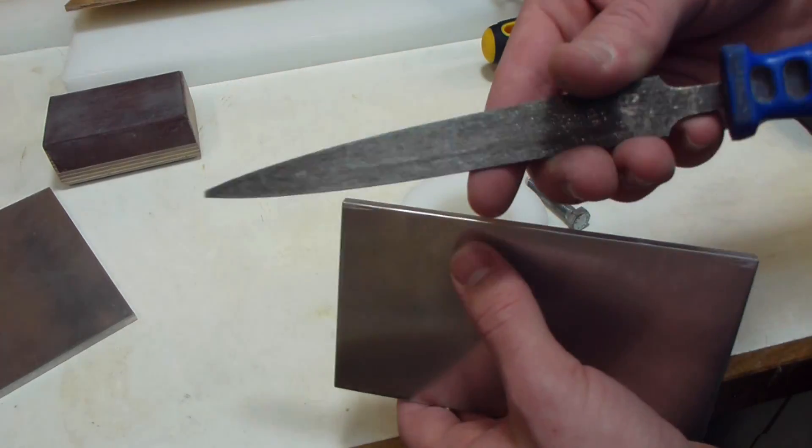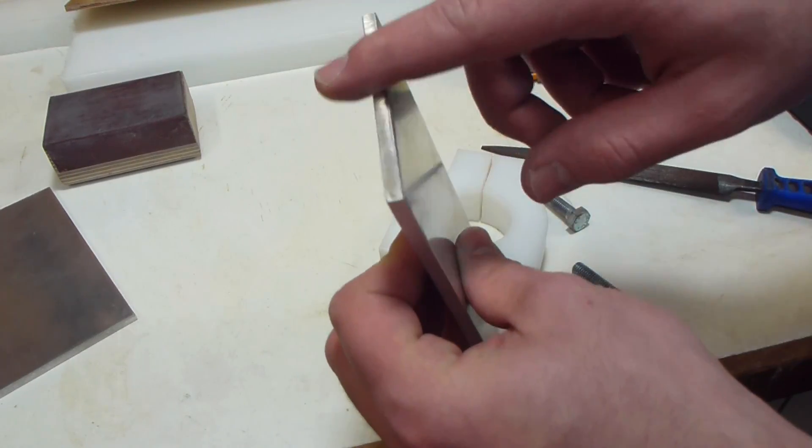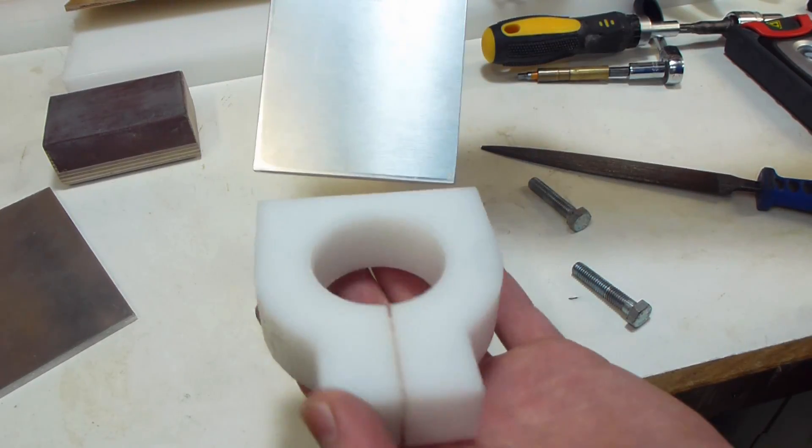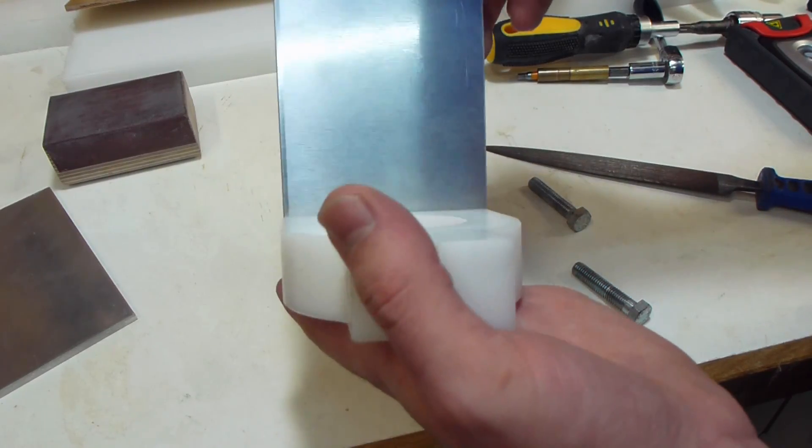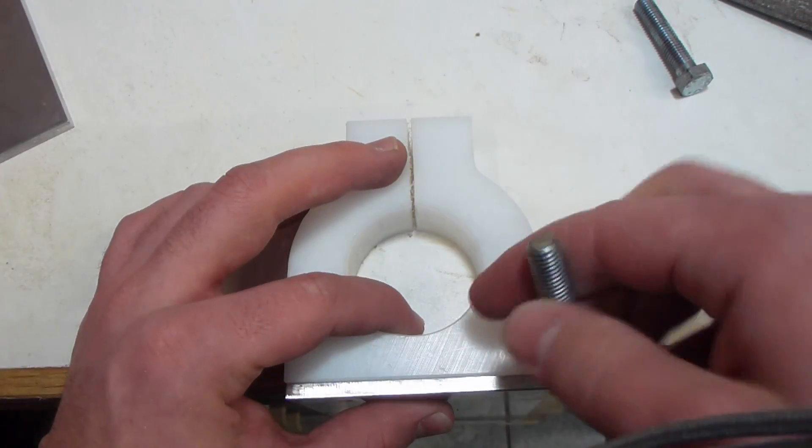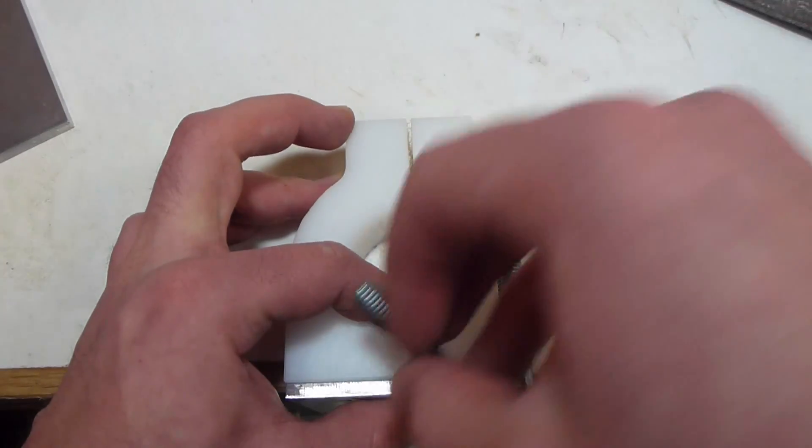Through various sanding and filing I got the edges smooth. Next I need to mount this mounting bracket onto the plate. I'm using two M8 bolts that will screw in like so.